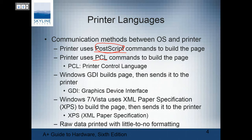PCL is a printer control language used to build a page. Windows GDI — graphics device interface — builds a page and then sends it to the printer, typically building most of the page on the workstation before sending it to the print server. Windows 7 and Vista use the XML Paper Specification — it's a new one, but the process stays the same. The PCL and XML processes tend to be basically the same. In raw mode, when we have a plain text document, you can print raw, and that's one of the ways you can test a printer without requiring a driver.